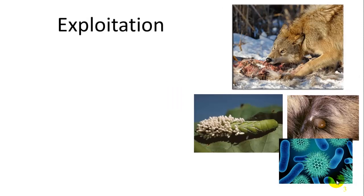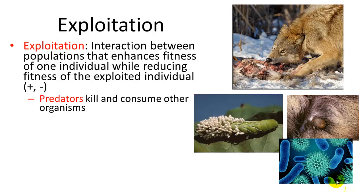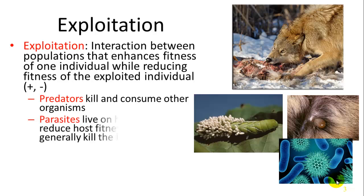Let's start off with defining what exploitation is. It's an interaction between populations that enhances fitness of one individual while reducing fitness of the exploited individual — a positive-negative where one individual positively benefits and the other negatively benefits. Predator-prey relationships are one type of exploitation. Predators kill and consume the other organism; it's dead and can no longer reproduce or survive.